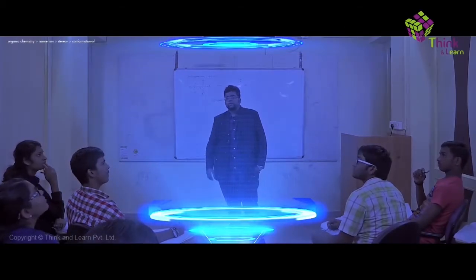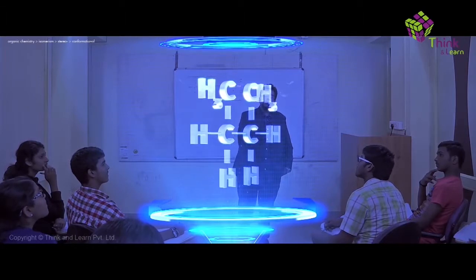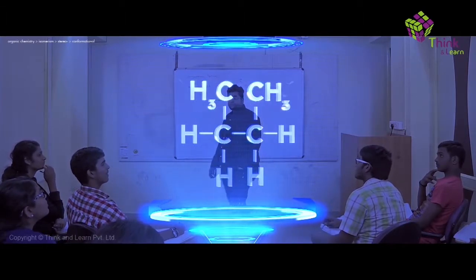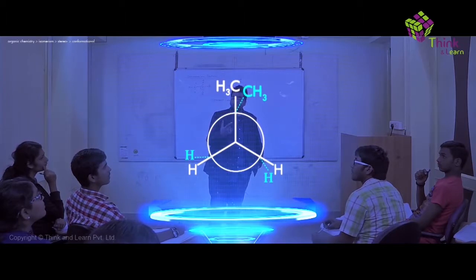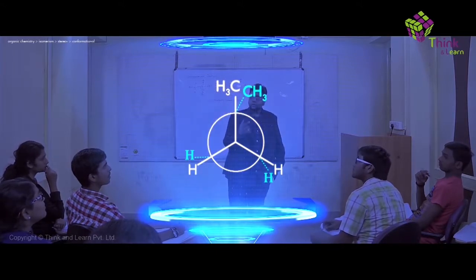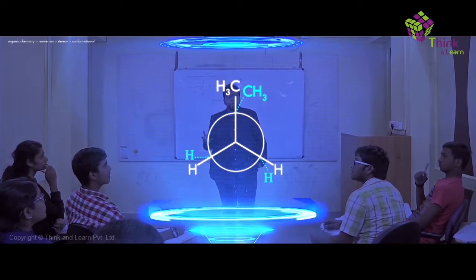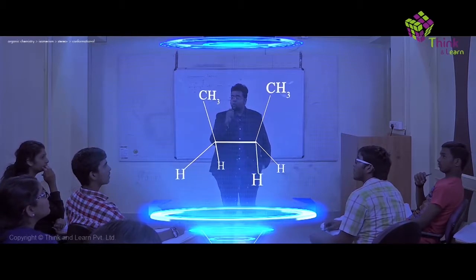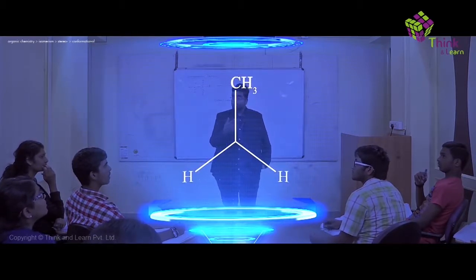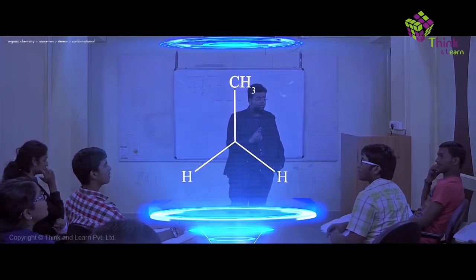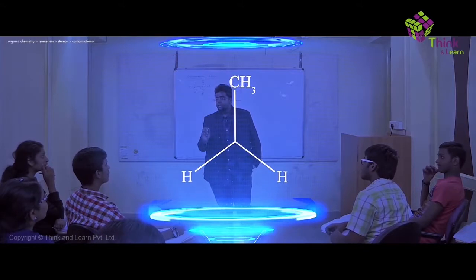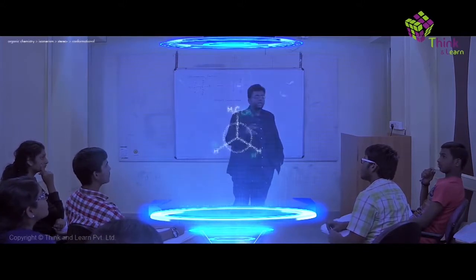Now if I have butane, how would you draw the Newman projection for butane? In this conformation, everything is completely eclipsing — the atoms on the distal carbon are eclipsing the front carbon. The CH3 on one carbon and the CH3 of the other carbon are exactly eclipsing, and the H's are completely eclipsing. So this is called a fully eclipsed conformation, and for butane this is called syn.